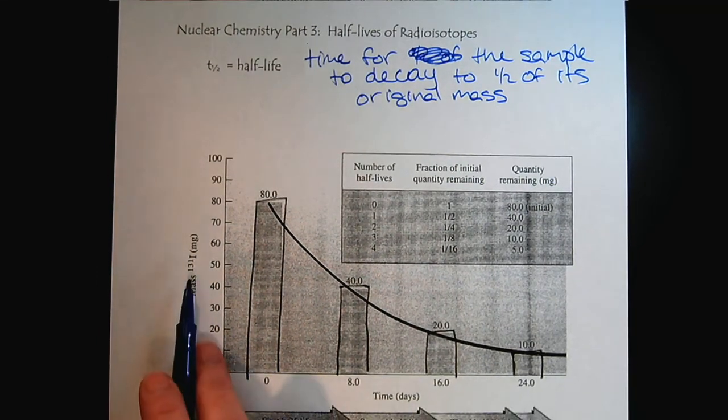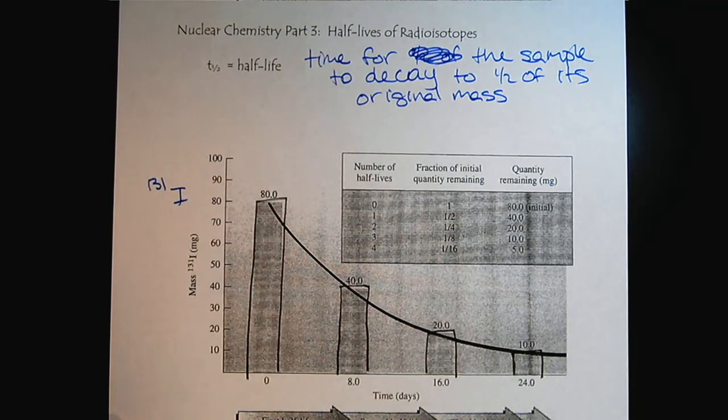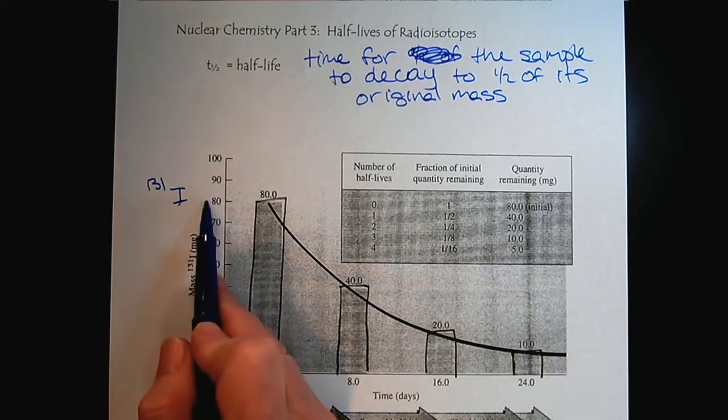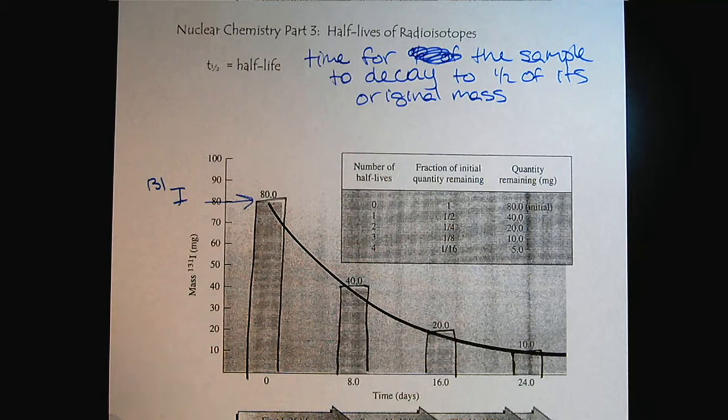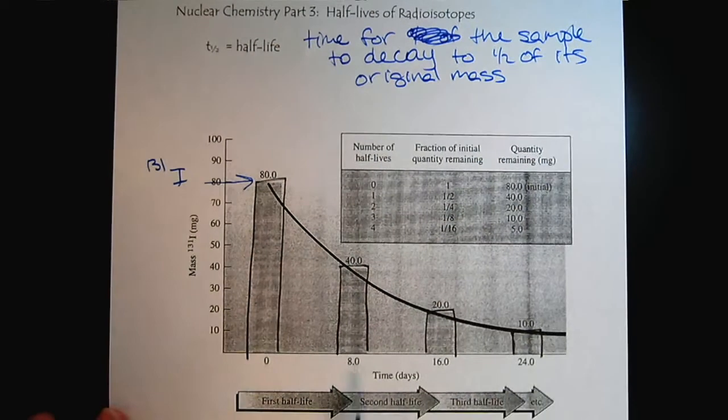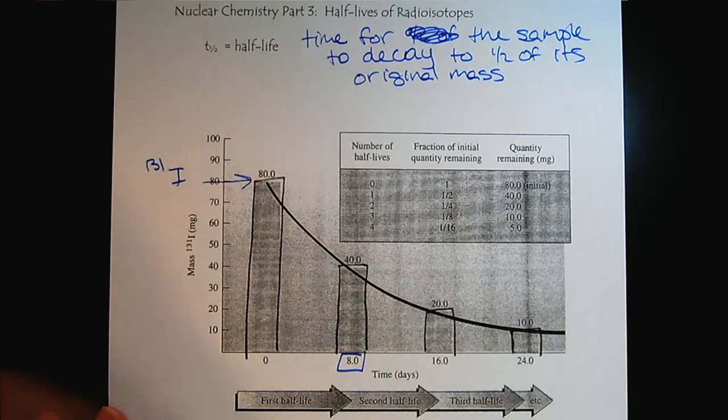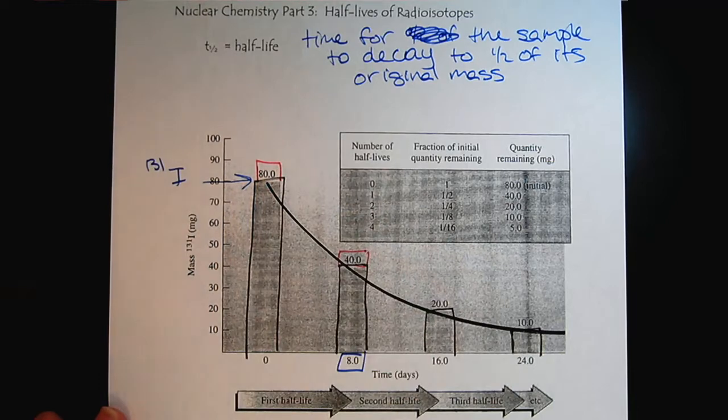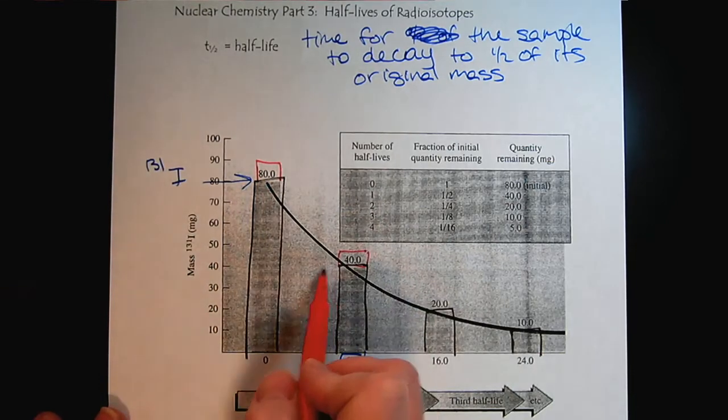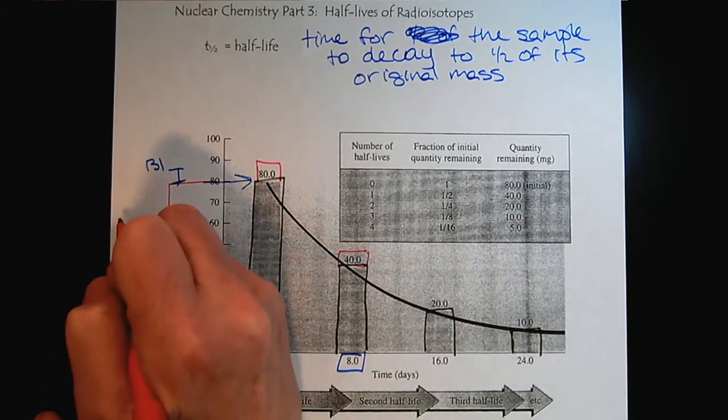So here we have the mass of iodine 131 in milligrams. We see that we started with 80 milligrams of iodine 131. Now, as we look eight days later, notice now we have one half of the original sample.